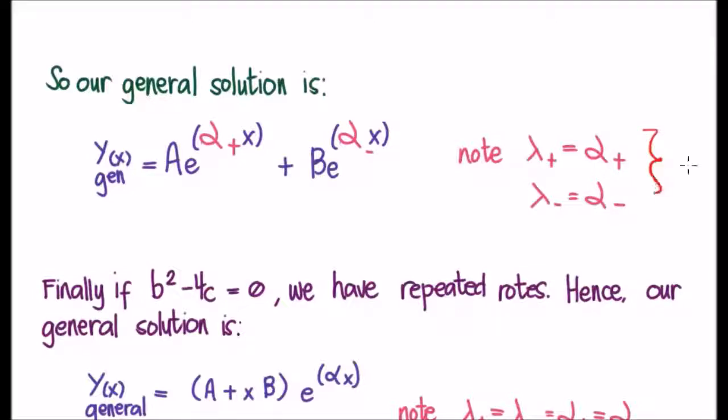And as I said, alpha plus and lambda plus are the same, and so is alpha minus and lambda minus in this particular case. So that's when we have real roots. We have b squared minus 4c is greater than 0.